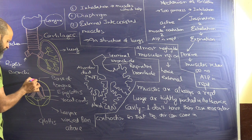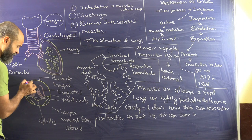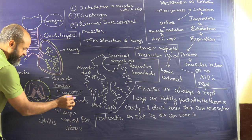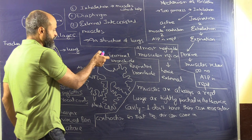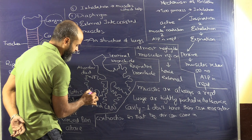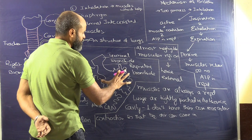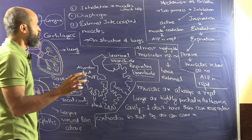Looking at the epiglottis and vocal cords: this is the base of the tongue, and these are the vocal cords and epiglottis. This is basically the glottis. The larynx as viewed from above shows the alveoli duct, the alveoli, the terminal bronchiole, and the respiratory bronchiole.